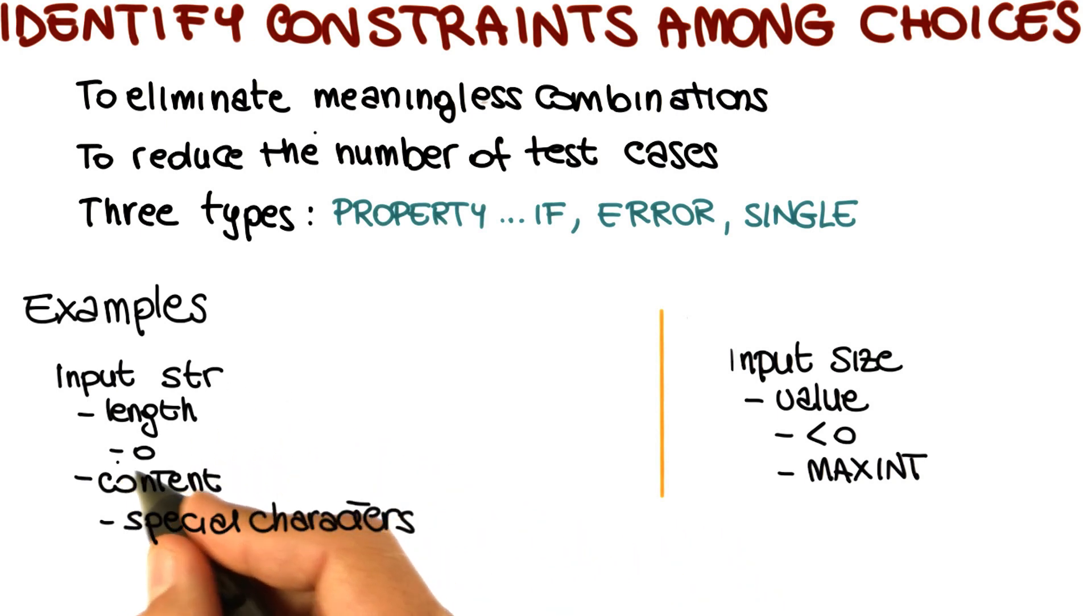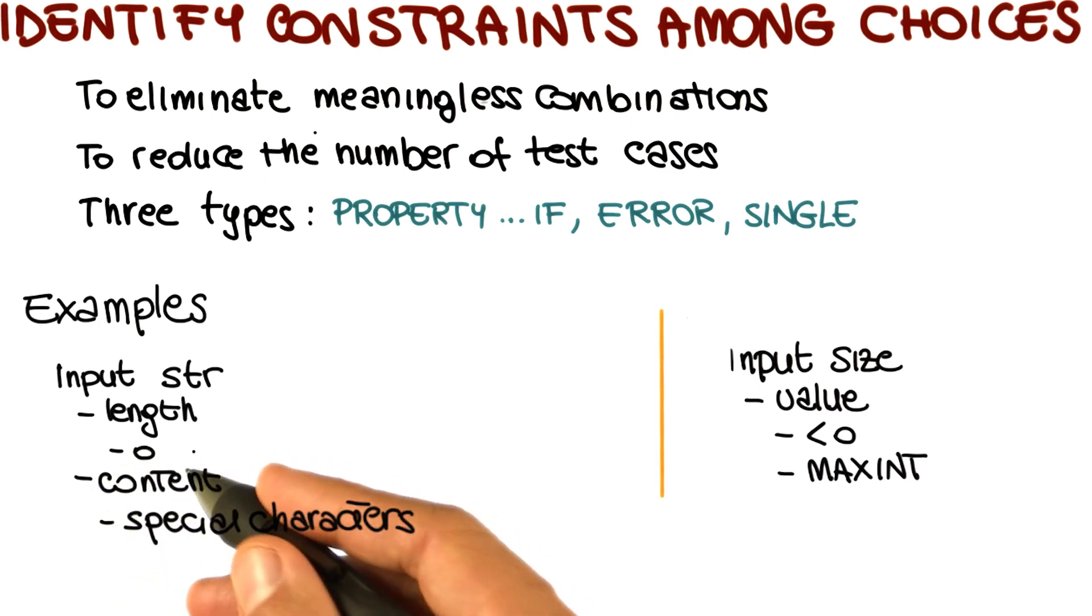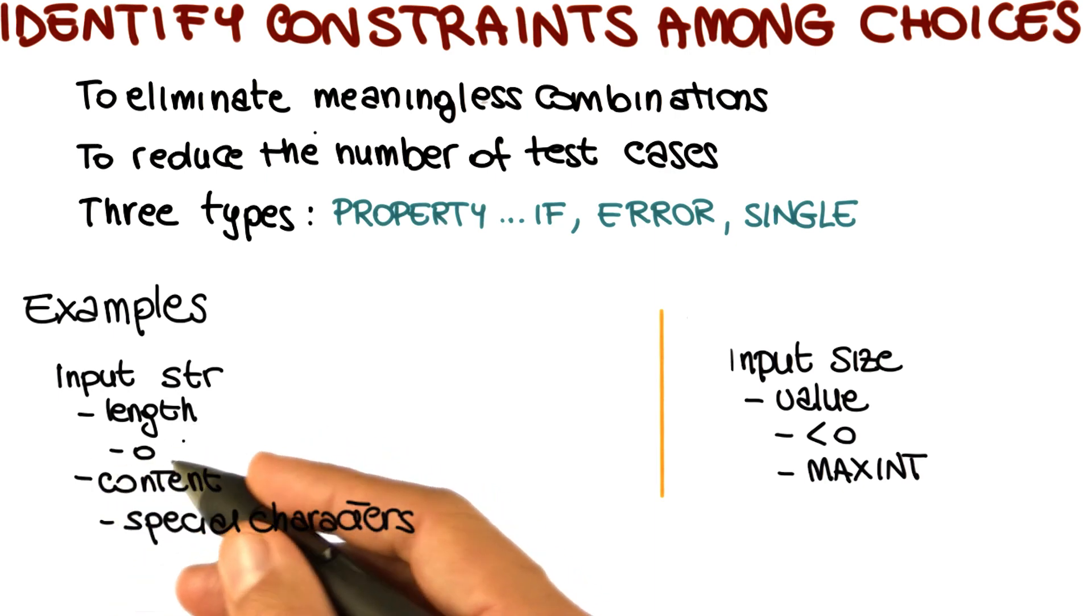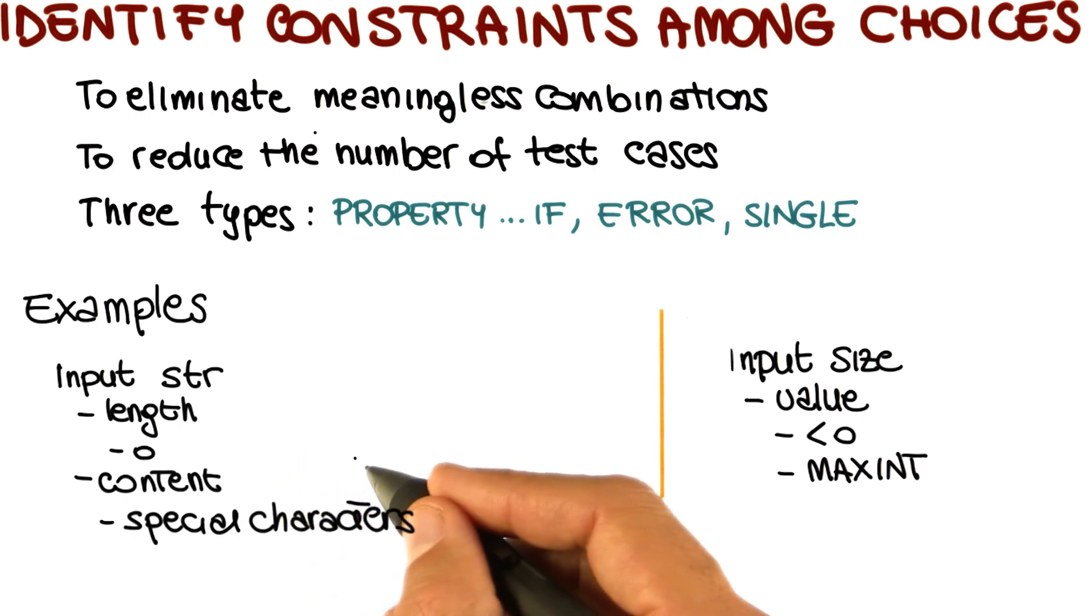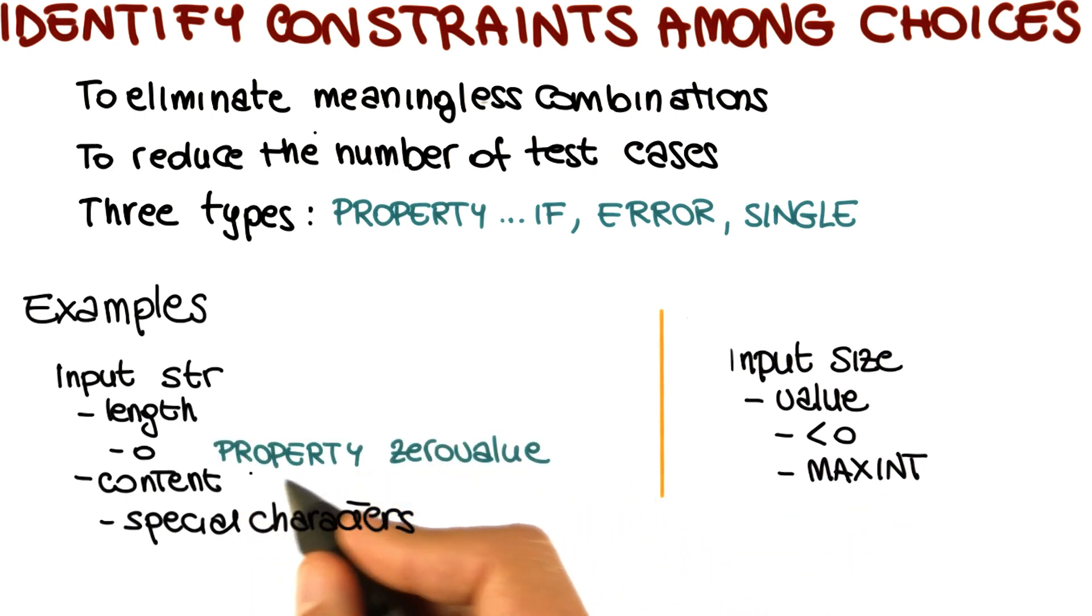Let's look, for example, at choice zero for category length of the string. We can say that if the length is zero, this defines a special property of the string. We specify this by saying that it identifies property zero value. So every time we use this choice, zero value is defined.